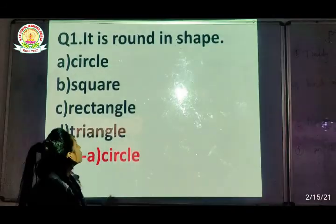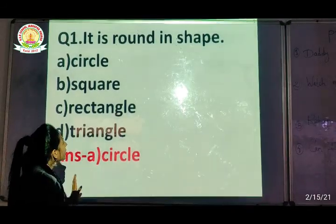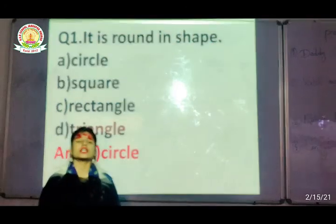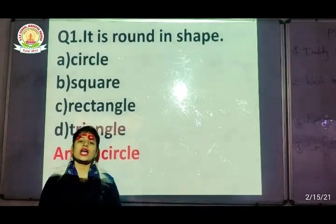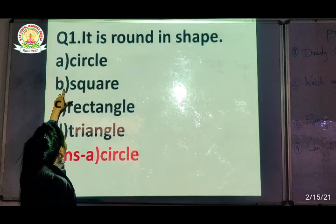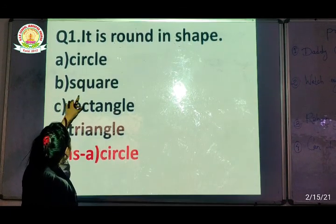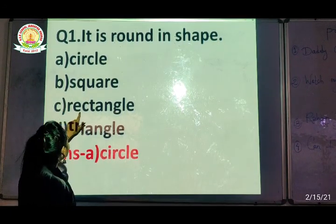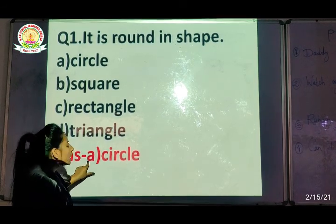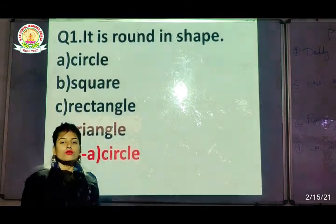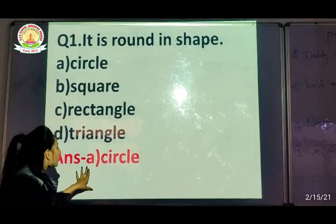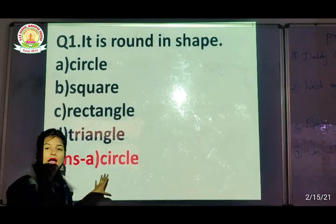So our first question is Rounding Shape. We are going to be able to prepare Rounding Shape. Our options are: option A - Circle, option B - Square, option C - Circle, option D - Spring. We are going to be able to identify the right option.